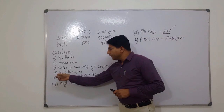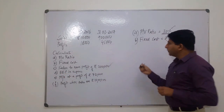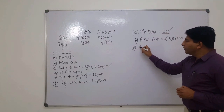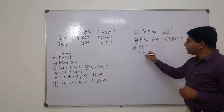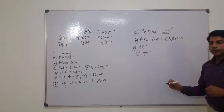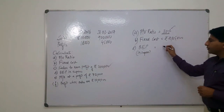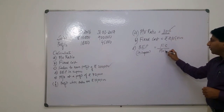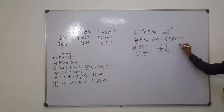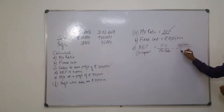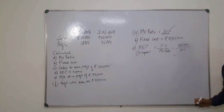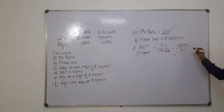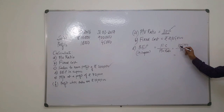The next question asks to calculate the break-even point in rupees. To calculate break-even point in rupees, we use the formula: fixed cost divided by PV ratio. Fixed cost is Rs 2,25,000 and PV ratio is 30%. Dividing Rs 2,25,000 by 30% gives us the break-even point.